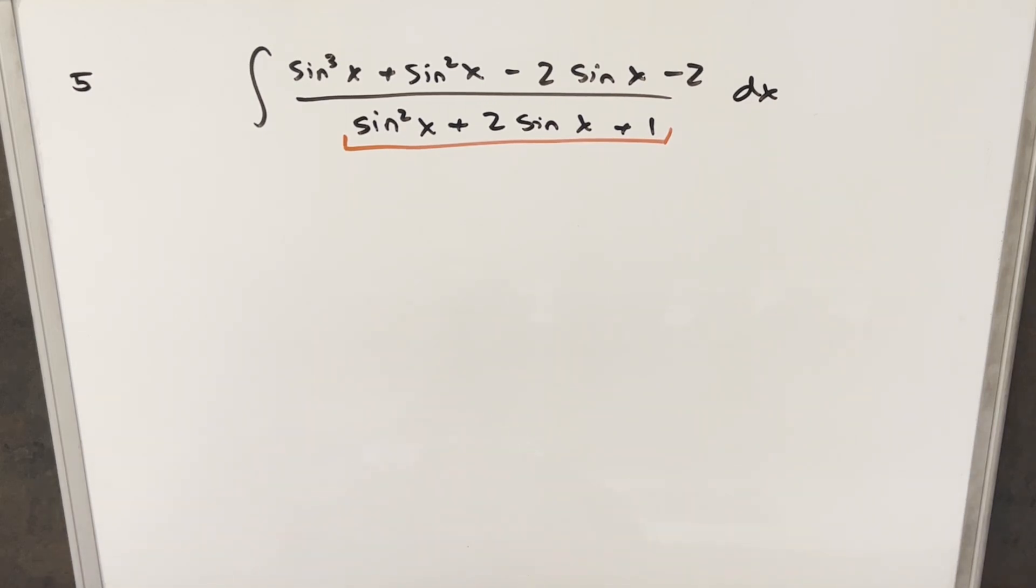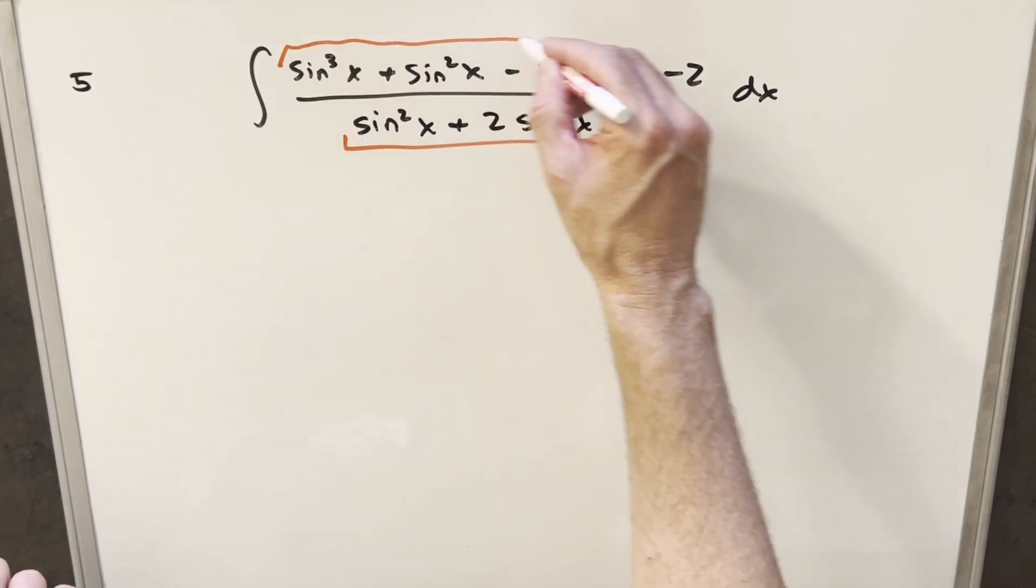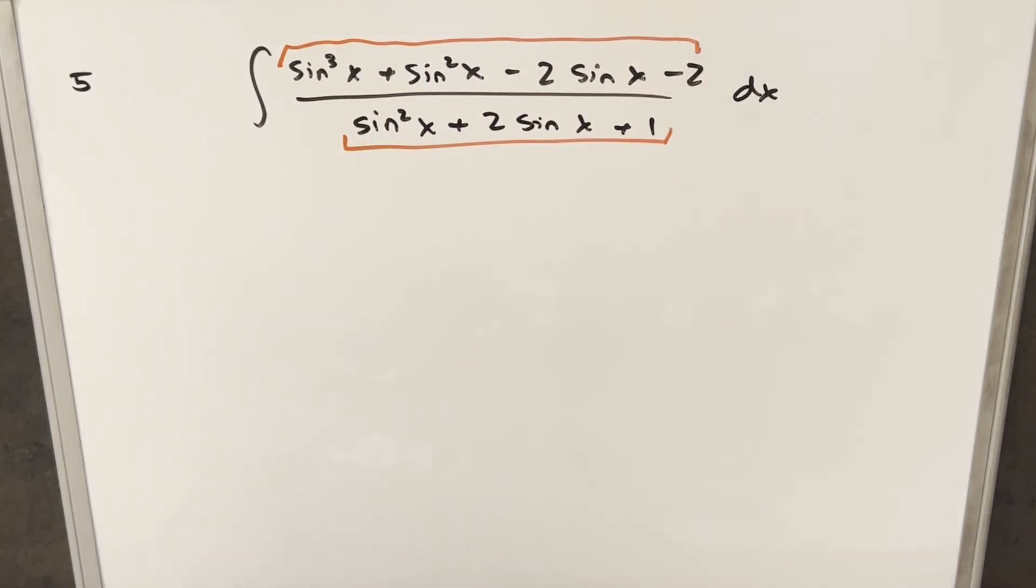For this one, I think we will try to do something similar. We want to do factoring, but we don't have a cosine here in the numerator. So I think what we need to do is do the factoring first and see where we can get with it, just because we don't have an obvious u substitution right away.